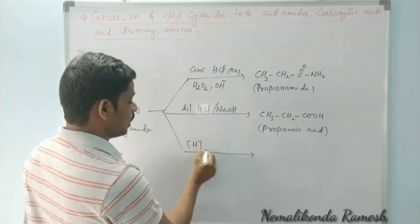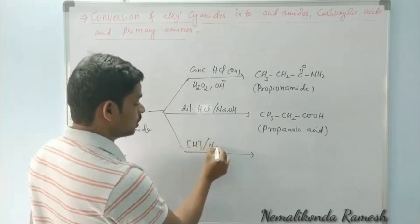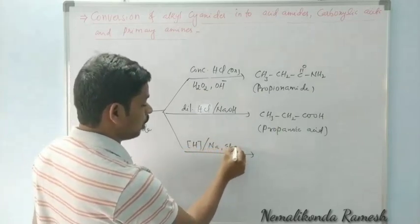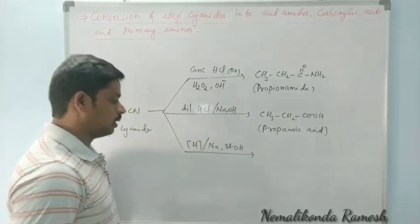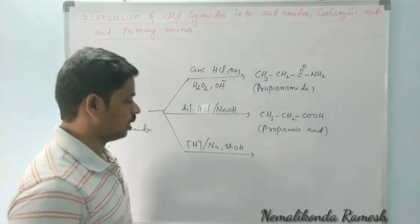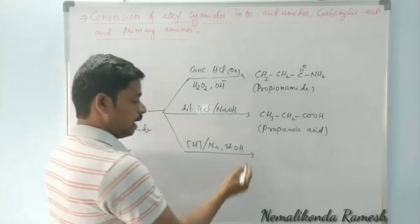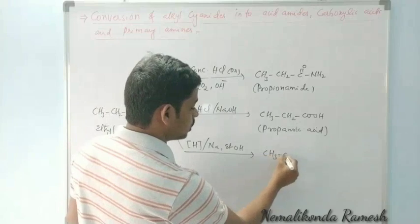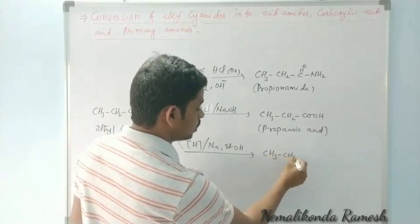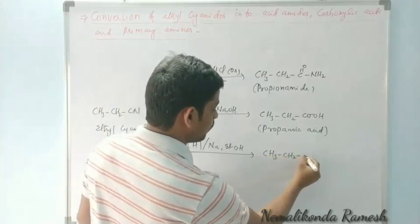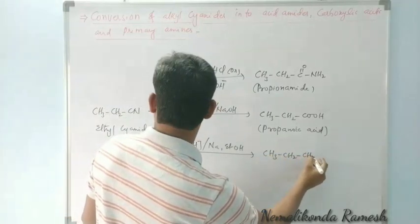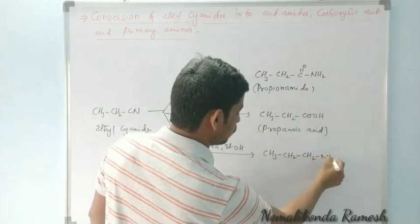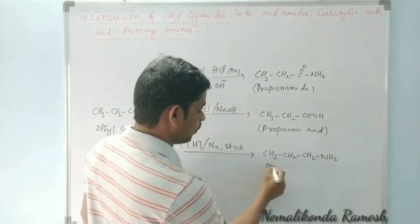Again, the same ethyl cyanide on reduction — in the presence of sodium and ethyl alcohol — gives the primary amine CH₃CH₂CH₂NH₂, which is propylamine, a primary amine.